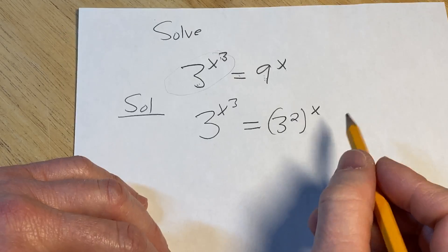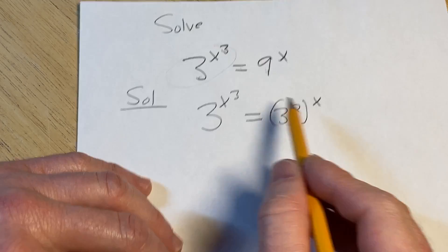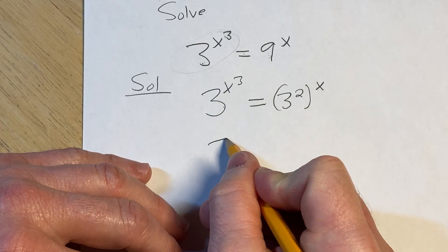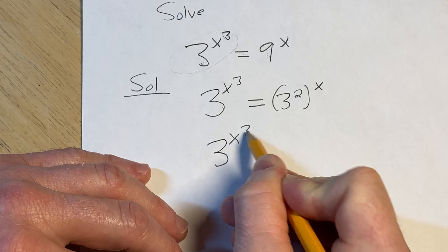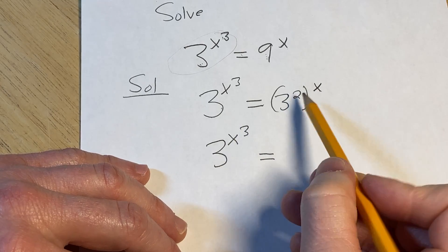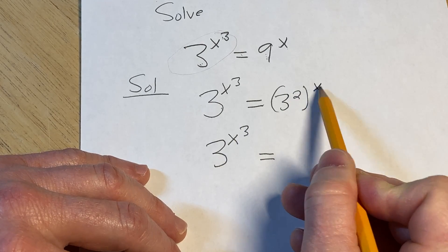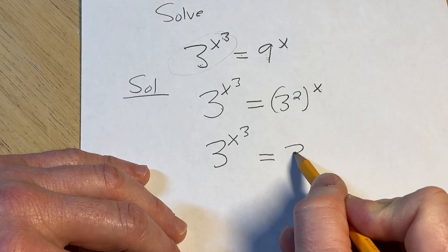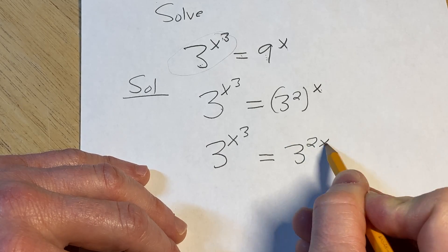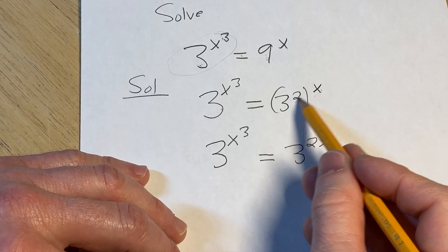All right, so at this point, we're just going to do some multiplication. We're going to keep this the same. So 3 to the x cubed is equal to, and then here you multiply, 2 times x is 2x. So this is 3 to the 2x. That's the rule for properties of exponents.